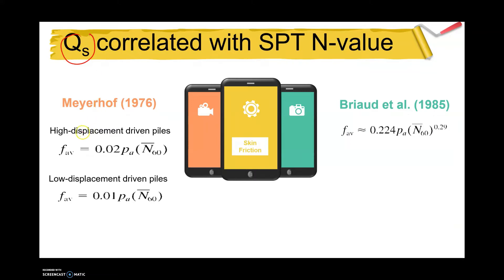In determining qs, for Meyerhof you need to consider whether your pile is using high displacement driven pile or low displacement driven pile to determine the friction average. Since qs equals the summation of f·p·ΔL, you need to find this f value.